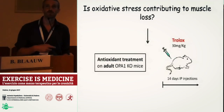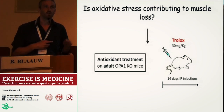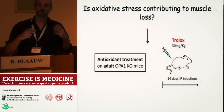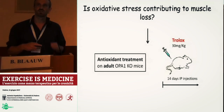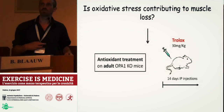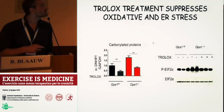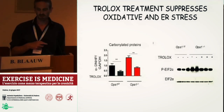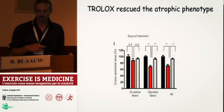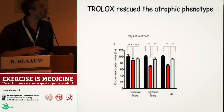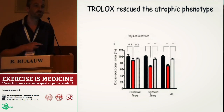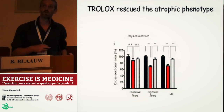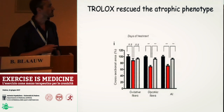In order to address this, we treated our mice with an antioxidant — Trolox, which is a general antioxidant. We tried to see after two weeks of antioxidant treatment how these mice were actually doing. What we found is that the treatment worked properly — we see less oxidative stress, less ER stress, less UPR response. And most importantly, we found that muscle fiber atrophy induced by the loss of OPA1 was completely prevented when we treated these mice with Trolox.